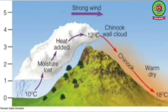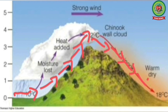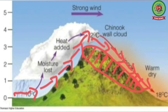Chinook is a warm and dry wind that originates in the Pacific Ocean. It strikes the Rocky Mountains of North America, climbs the mountain, and becomes cold, but on the leeward side the Chinook becomes warmer and drier. It melts all the ice on the mountain slope of the Rockies in winter due to its high temperature, hence it is also called the Snow Eater. Chinook is very helpful for the production of wheat in the prairies grasslands of North America.